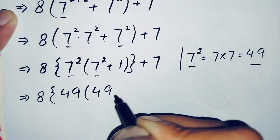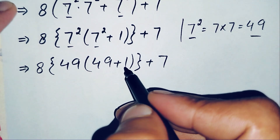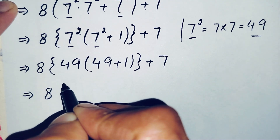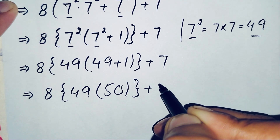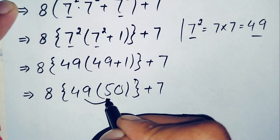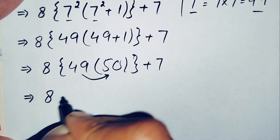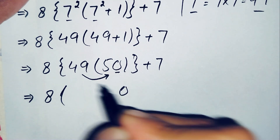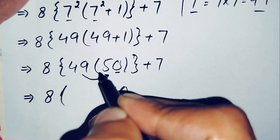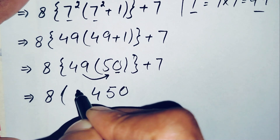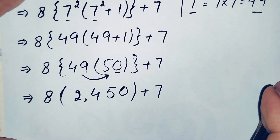The equation becomes eight times forty-nine times the quantity forty-nine plus one, plus seven. Since forty-nine plus one equals fifty, this simplifies to eight times forty-nine times fifty plus seven. Multiplying forty-nine by fifty: five times nine is forty-five, carry four; five times four is twenty, plus four is twenty-four. So forty-nine times fifty equals two thousand four hundred and fifty.